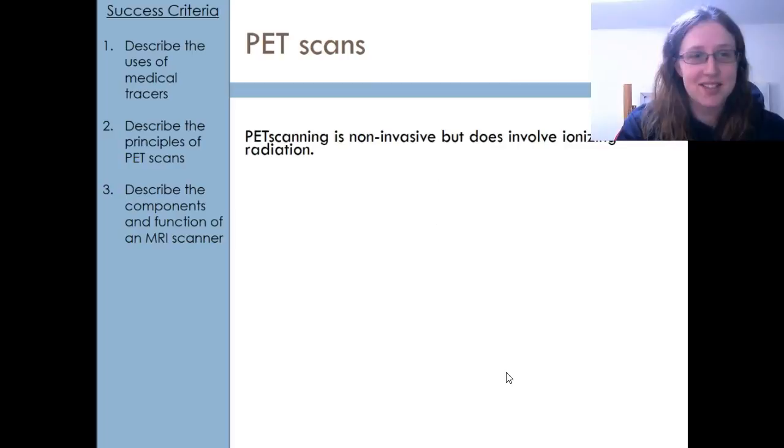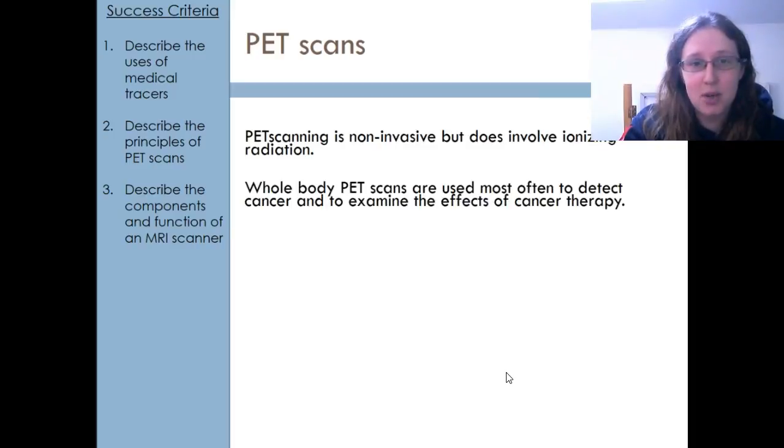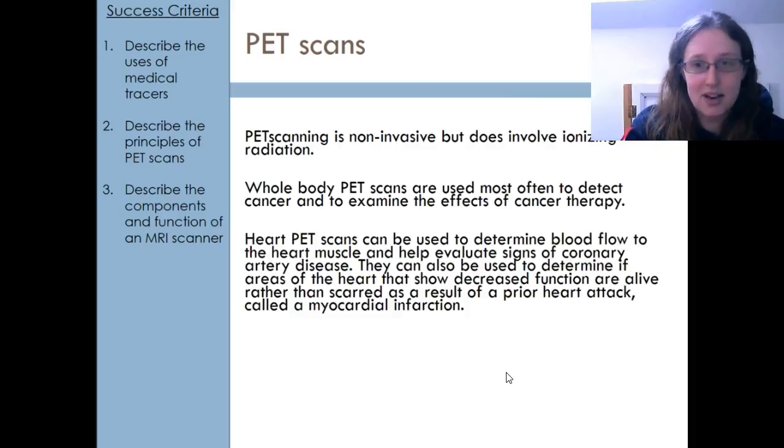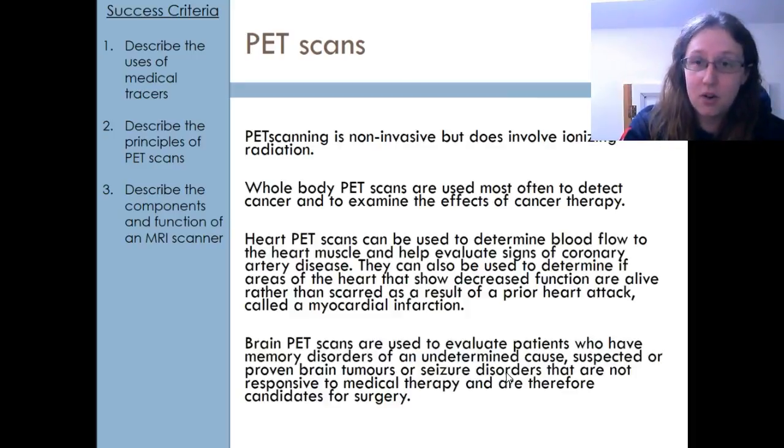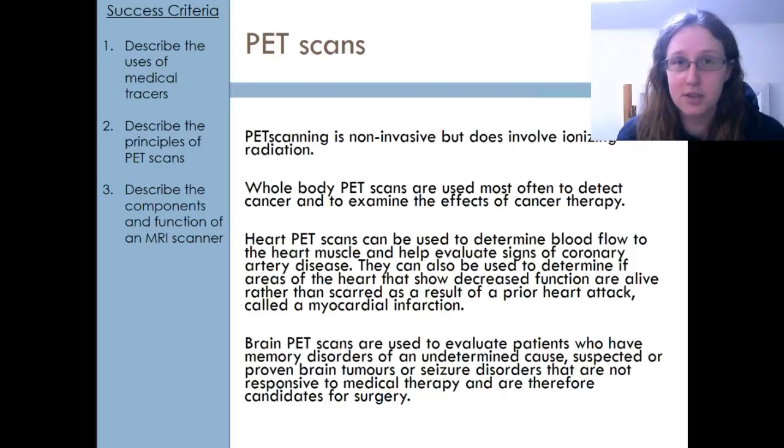So PET scans are non-invasive, which means they don't involve any cutting, but they do involve ionising radiation. They're most often used to look for cancer and to check on the effects of cancer therapy. We can use PET scans to look at hearts and blood flow, and also to look at brains for tumours or seizure disorders and check if we can do surgery.